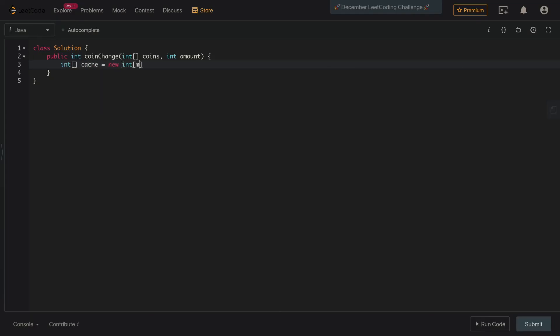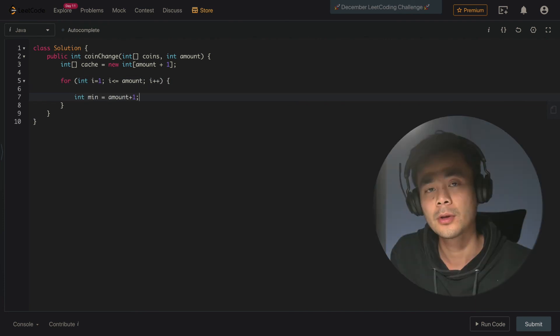Alright, so first we need to initialize our cache and we need to iterate over each of the amounts starting from one. Let's talk about the reason why we choose amount plus one as a default minimum. Because in our code we want to have a simple way to just keep using math.min in order to pick out the smallest coin. Number two is we want to prevent integer overflow because we want to take advantage of the fact that the smallest coin denominator has to be one. So amount plus one will never get hit.